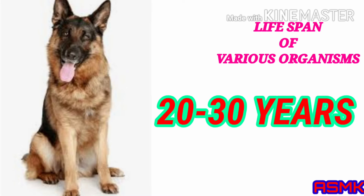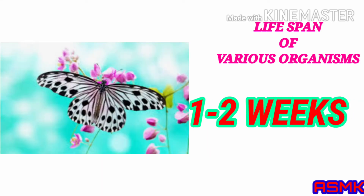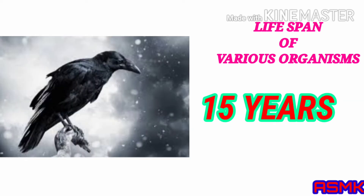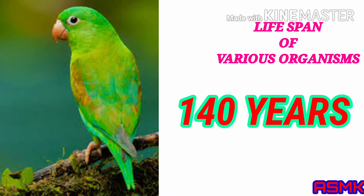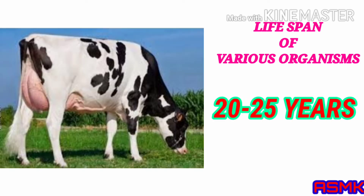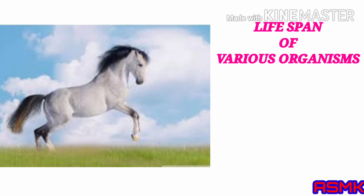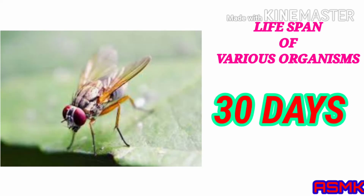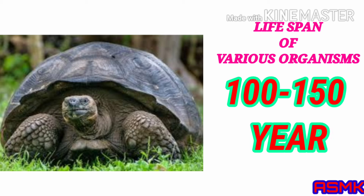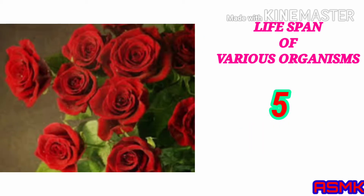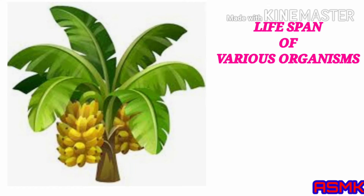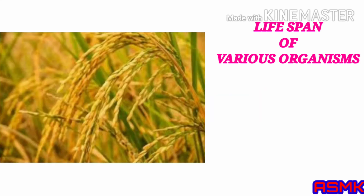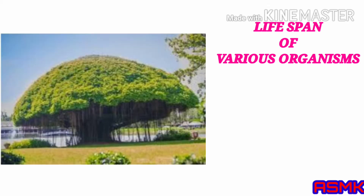Lifespan of various organisms: elephant 60 to 90 years, dog 20 to 30 years, butterfly 1 to 2 weeks, crow 15 years, parrot 140 years, cow 20 to 25 years, horse 60 years, crocodile 60 years, fruit fly 30 days, tortoise 100 to 150 years, rose 5 to 7 years, banana tree 25 years, rice plant 3 to 4 months, banyan tree 200 years.